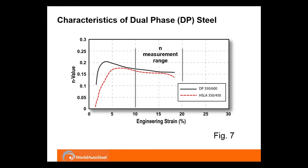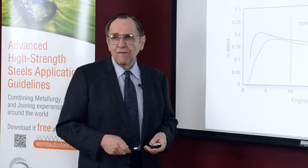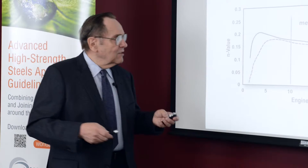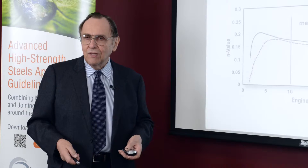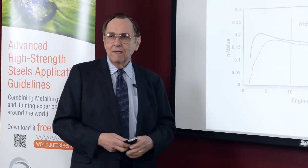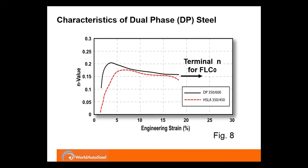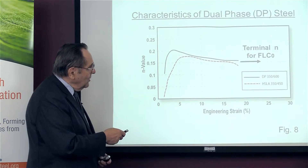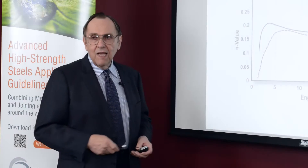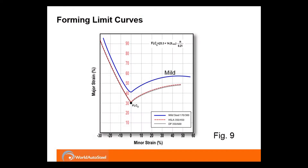Unfortunately, when you are in the n value measurement range — which is from 10 to 20 percent — these two steels will have the same n value. So you look at it and say: the dual phase does no more than HSLA, why should I use it? Well, it's because it's done its job already and now it's resting. The terminal n value, which determines the height of the forming limit curve, is out here. The n value is identical, so the heights of your forming limit curves are going to be the same.